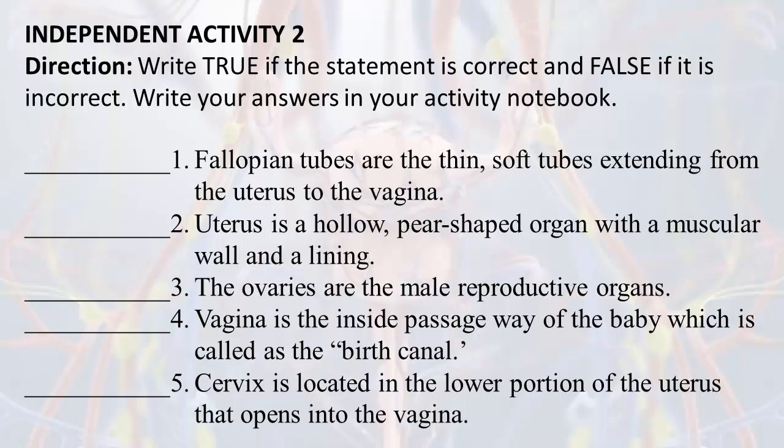1. Fallopian tubes are the thin, soft tubes extending from the uterus to the vagina. 2. Uterus is a hollow, pear-shaped organ with a muscular wall and a lining. 3. The ovaries are the male reproductive organs. 4. Vagina is the inside passageway of the baby which is called the birth canal. 5. Cervix is located in the lower portion of the uterus that opens into the vagina.